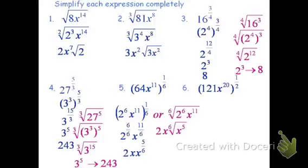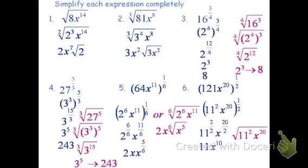Treating number 6 the same way, 121 can be written as 11 squared. So this is the quantity 11 squared times x to the 20, all raised to the 1 half. Distributing the exponent: 11 to the 2 halves becomes just 11, and x to the 20 halves becomes x to the 10. Using radicals — the 1 half power is the same as the square root: the square root of 11 squared is just 11, and the square root of x to the 20 is x to the 10. Either way, the answer is 11x to the 10th.